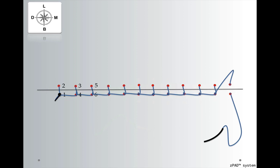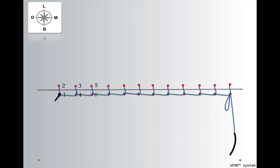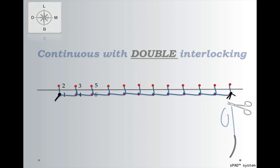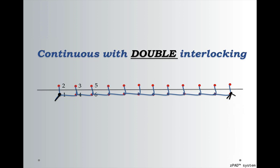To finish off the continuous with double interlocking, it's the exact same thing. We're going to use the last loop as the short end, and then tie the knot. This is going to create our ending knot, and we'll trim all three ends. This type of suture is called the continuous suture with double interlocking, and this is the solution for opening of your continuous suture patterns.